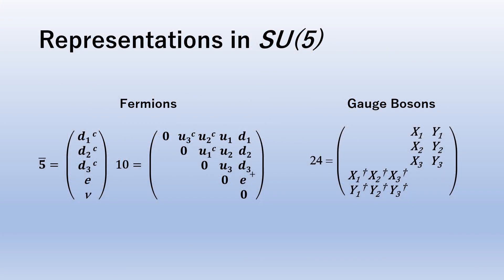The fermion representations are shown on the left. The adjoint gauge bosons are shown on the right, where we have only written down the X and Y part. X and Y are the new gauge bosons that have appeared in the SU(5) GUT. They convert quarks to leptons and vice versa.